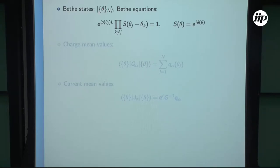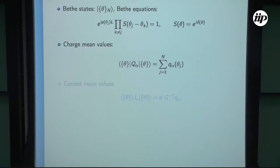We are talking about Bethe ansatz solvable models. The Bethe states are parametrized by rapidities θ, and we are looking at n-particle states. We have the Bethe equations; in the simplest non-nested case they have the form where P is the momentum parametrized by the rapidities, S is the scattering phase given by the scattering matrix (scattering amplitude), and δ is the scattering phase. For the charge mean values, when Q_α is the global charge (an integrated charge density), the charge mean values are simply additive: we sum up the one-particle charge eigenvalues, following from extensivity of the charges.